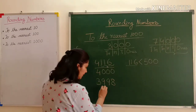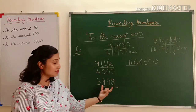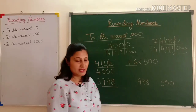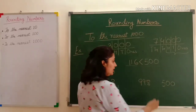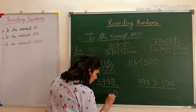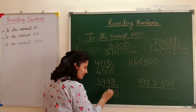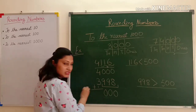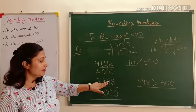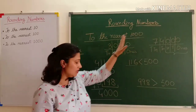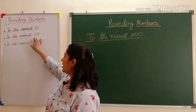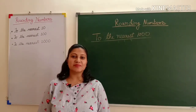Let's take another example: 3998. The last three digits form the number 998. I compare 998 with 500 — 998 is greater than 500. When the number is greater than 500, I put zero in the ones, tens, and hundreds places and add one to the thousands place: 3 becomes 4. So the number is 4000. When I round off 3998 to the nearest thousand, the answer is 4000. I hope you have understood how to round off numbers to the nearest ten, hundred, and thousand. Please like and subscribe our channel. Thank you.